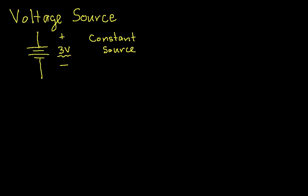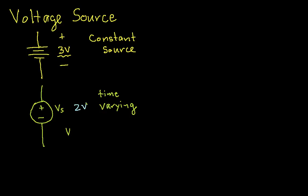Another symbol you'll see quite often is a circle with a plus and minus in it. You'll see something like V sub S, or perhaps some constant voltage like 2 volts. But the idea is that this is also a voltage source, but it's possibly time-varying. In other words, V sub S might be some signal that changes as a function of time — for example, V sub S could be something like 10 cosine 377T. The key difference is that the circle symbol could represent a time-varying voltage.